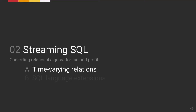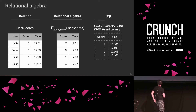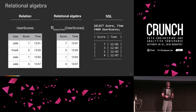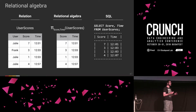Now let's finally talk about SQL, starting with relational algebra. Relational algebra is the mathematical foundation underpinning SQL. The idea is you have things called relations — two-dimensional sets of data with columns as attributes and rows as values. In this example we have user scores: three scores from Julie and one from Frank with timestamps. You can apply relational operators to these relations — for example, a projection operation that projects the relation down to just score and time columns, dropping the user column. One great thing about relational algebra is that it's a closed system — any valid relational operator applied to a relation yields another relation, so you can arbitrarily nest and chain these things.